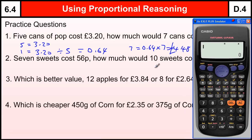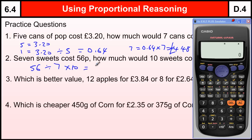Seven sweets cost 56p — how much is ten? We can speed this up and just divide by seven and times by ten. Dividing by seven gives us what one sweet costs — that would be 8p. Times it by ten gives us £0.80 for ten sweets. You don't have to write it all out — you can just do it in two steps: divide and then times.